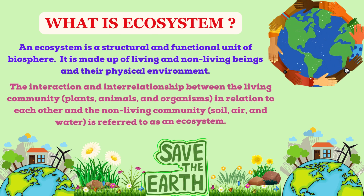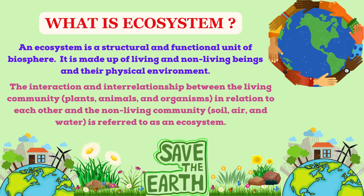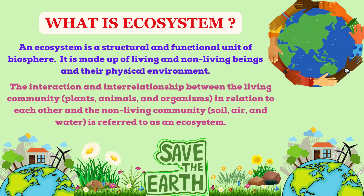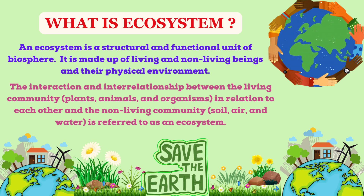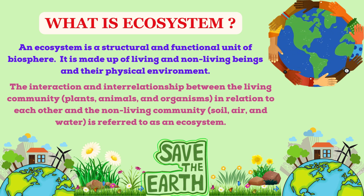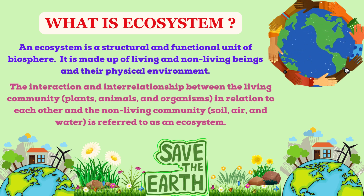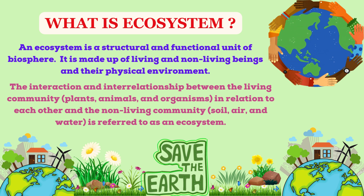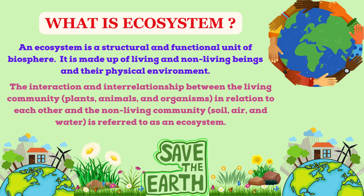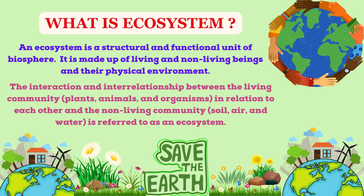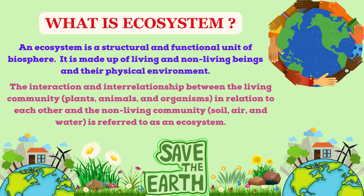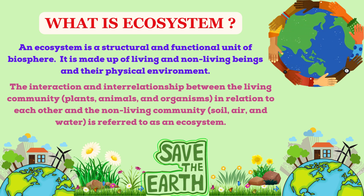What is an ecosystem? An ecosystem is a structural and functional unit of the biosphere. It is made up of living and non-living beings and their physical environment. The interaction and interrelationship between the living community — which is plants, animals and organisms — and the non-living community — which is soil, air and water — is referred to as an ecosystem.